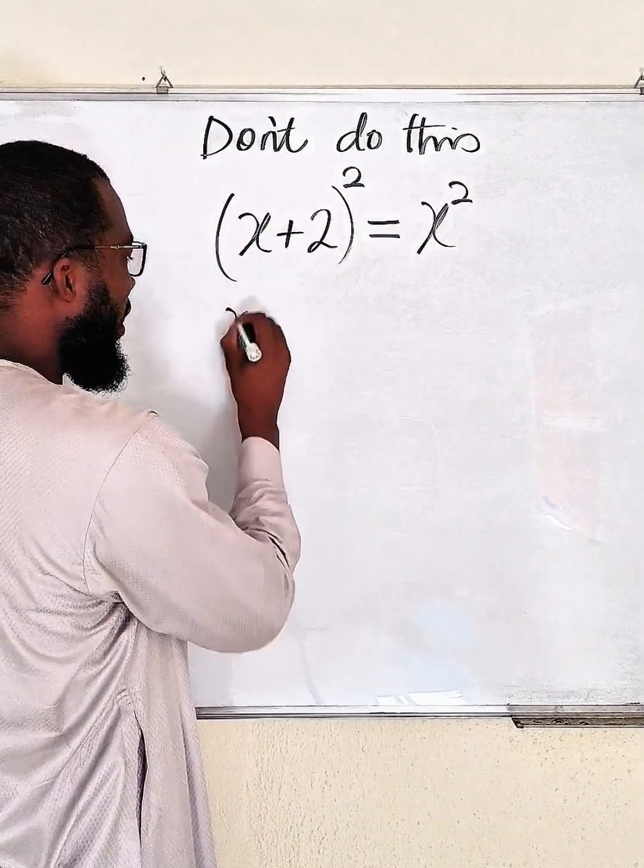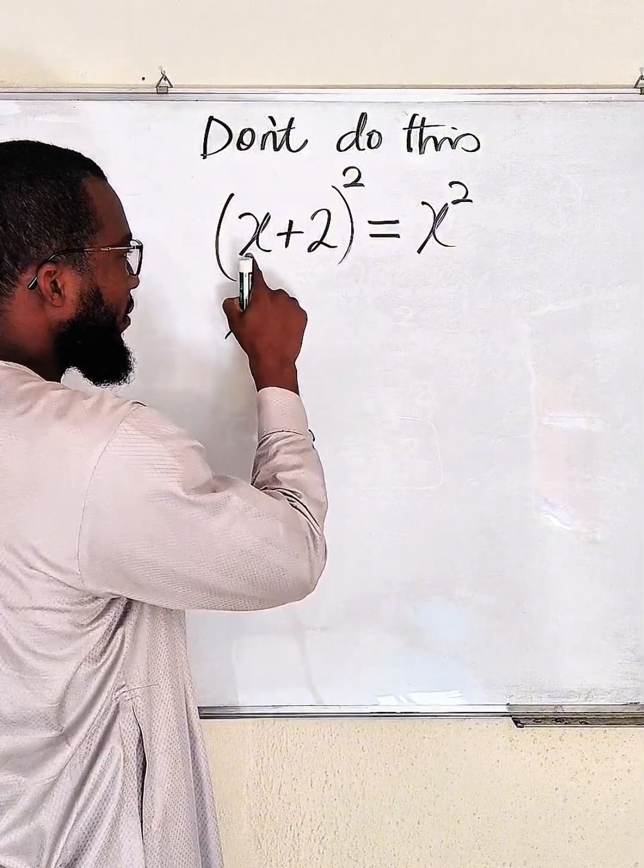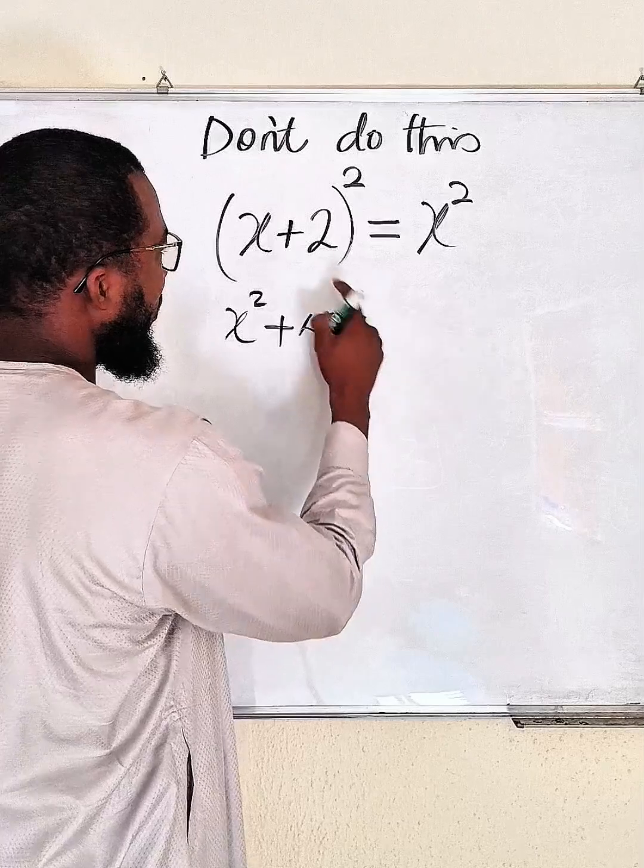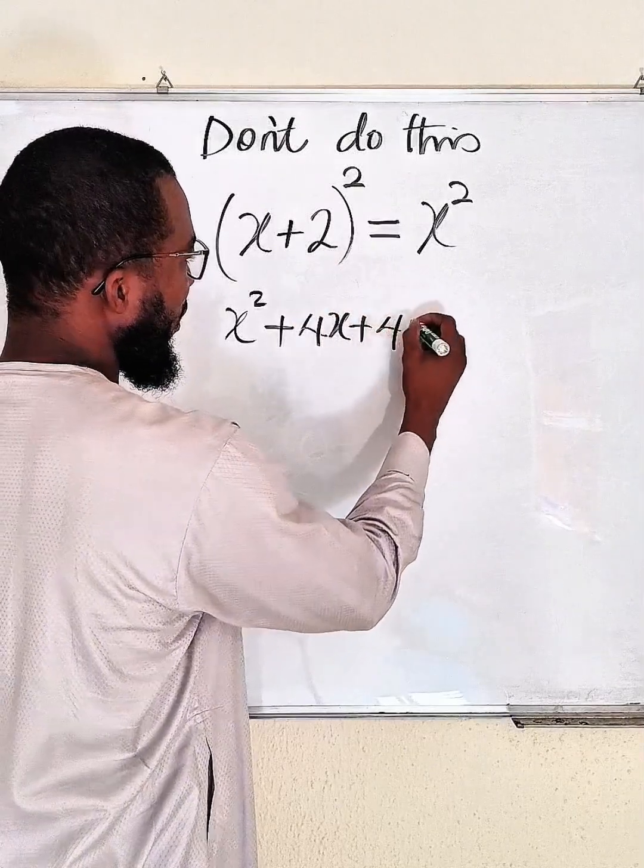That is, first term squared is x², then plus two times x times 2, that will give us 4x, then plus 2 squared is 4, right?